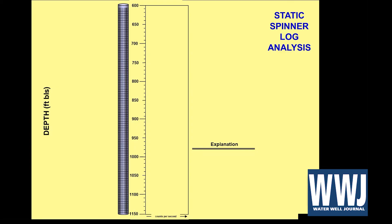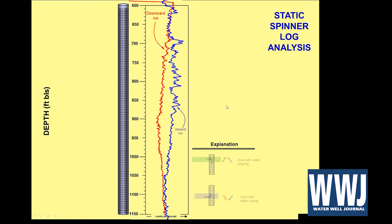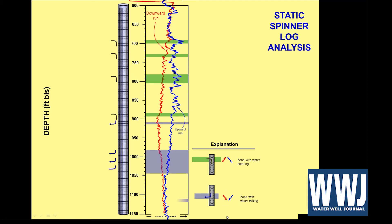So how can we measure this? With that same spinner log setup — and there are ways to do it with the dye tracer as well — with the pump turned off, we run our spinner tool down and up at the same line speed, one downward run and one upward run. The red trace shows the downward run. In this example from an actual well in California, at about 900 feet we had water coming in and then flowing back out because of the vertical hydraulic gradient. When you see a V opening downward, that's where water is flowing inward; where you see a V opening upward, that same water is flowing back out.